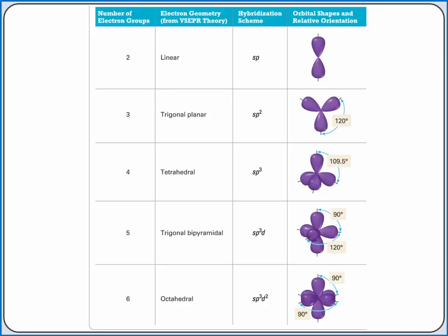In summary, we will use the Lewis structure to determine how many electron groups are on an interior atom. The number of electron groups determines how many standard atomic orbitals should be added together to form hybrid orbitals.